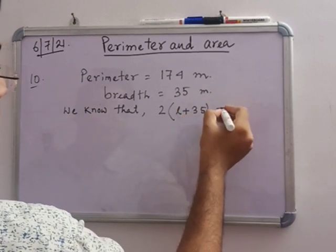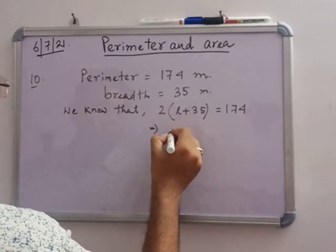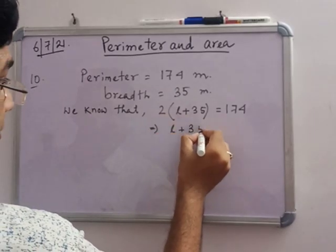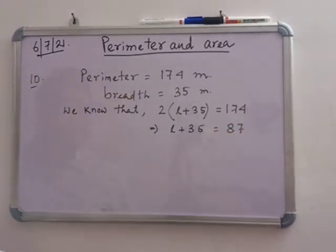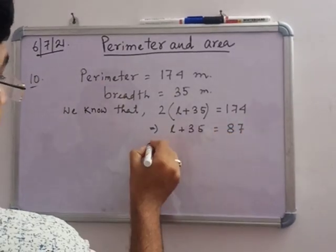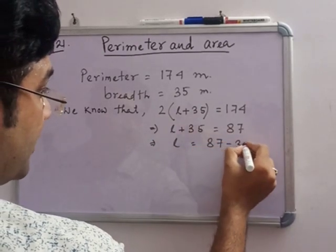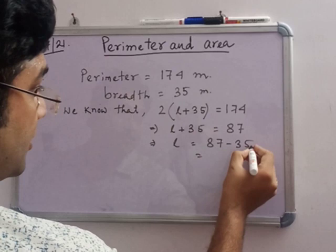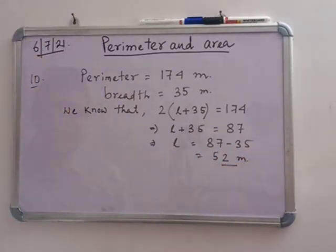So 2 into L plus 35 equals 174. L plus 35 equals 87. And L equals 87 minus 35, this is 52 meter. So L equals 52 meter. Note it down all of you.